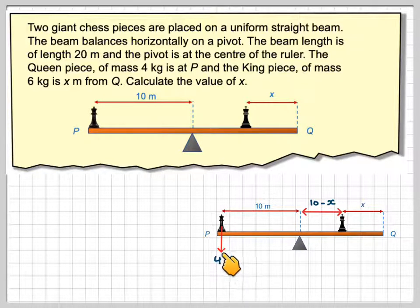This would be 4G, because it's weight acting downwards, and this would be 6G, weight acting downwards.